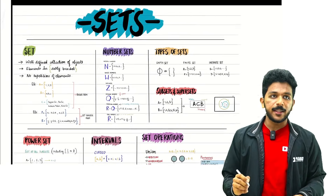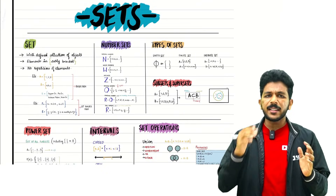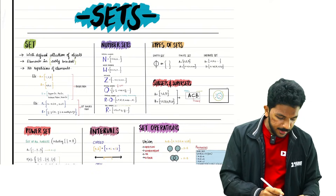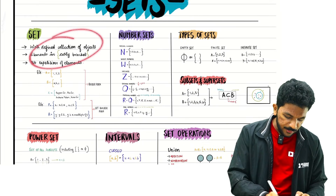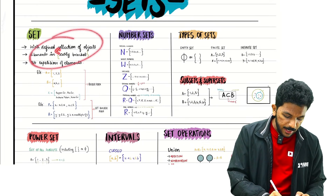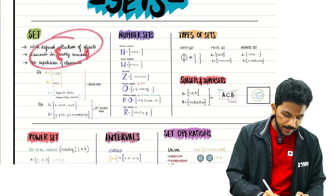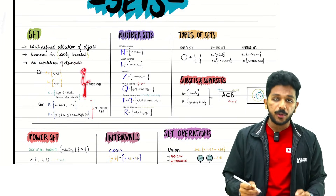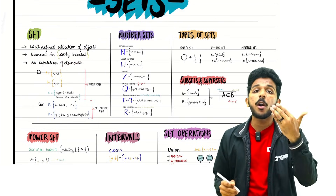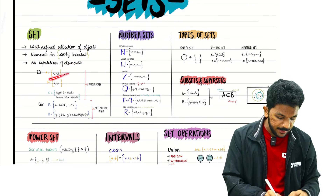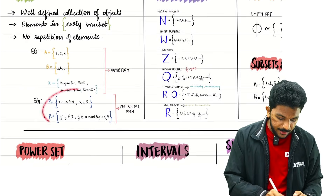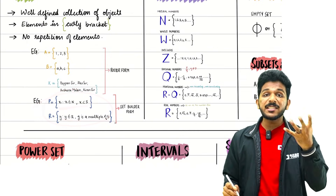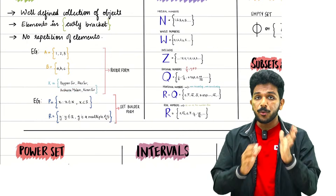So let's start. Sets is a very simple chapter with a very simple definition. Sets use curly brackets. Sets can be written in roster form or as a common set. Sets can also be written in set builder form — using instructions and rules. For example, this is 5 less than 6, which is a set builder form.